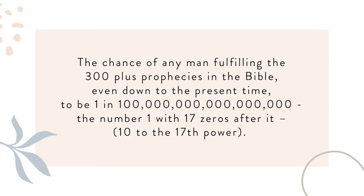I wish we had time to study more types, but we don't — you will find some in your outline. Let's close our internal evidence section with another statistic that will again increase our confidence God's word is true. Professor and theologian Peter Stoner in his book Science Speaks calculated the chance of any one man fulfilling the 300-plus prophecies in the Bible, even down to the present time, to be one in — I can't even say the number — but it's the number one with 17 zeros after it, which mathematically is 10 to the 17th power.